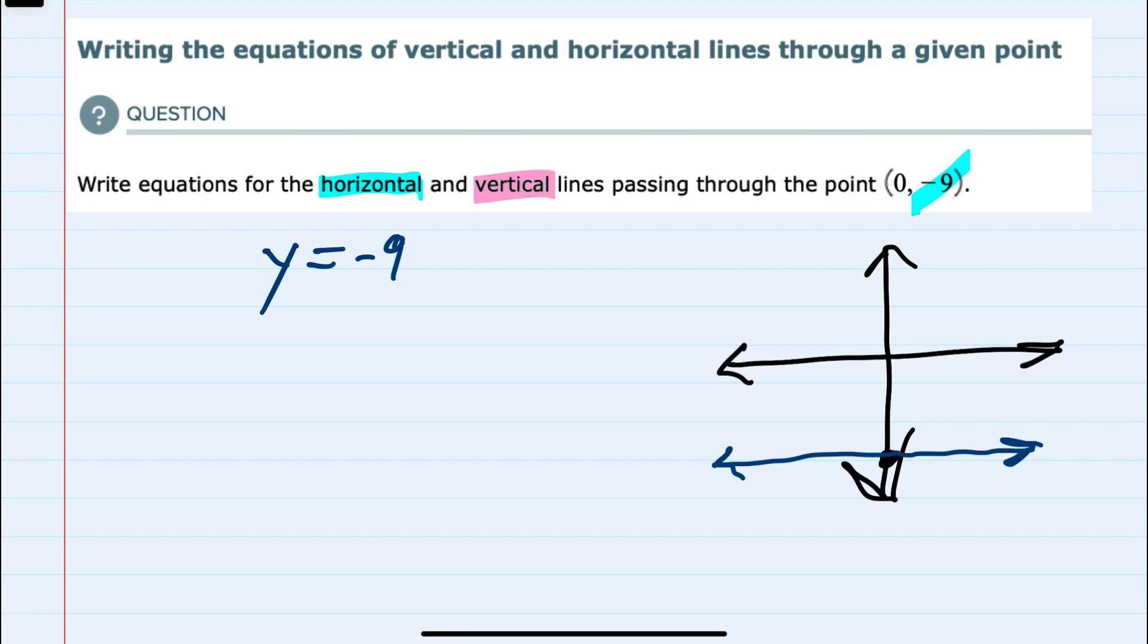And then the vertical would always have the same x value as that point, which here is 0. So the x would always be equal to 0. So horizontal lines have the equation y equals a constant, and vertical lines have the equation x equals a constant.